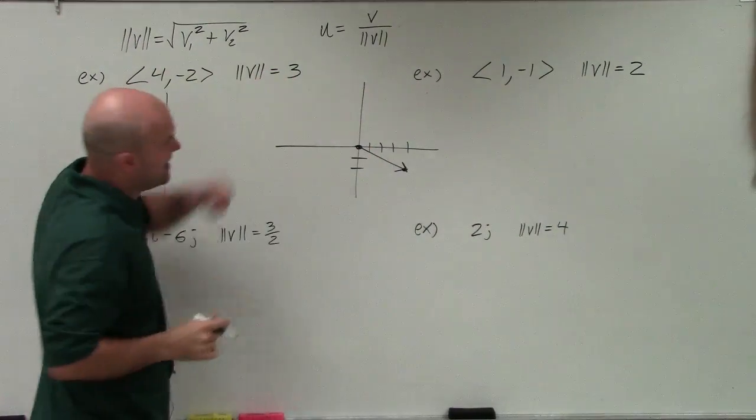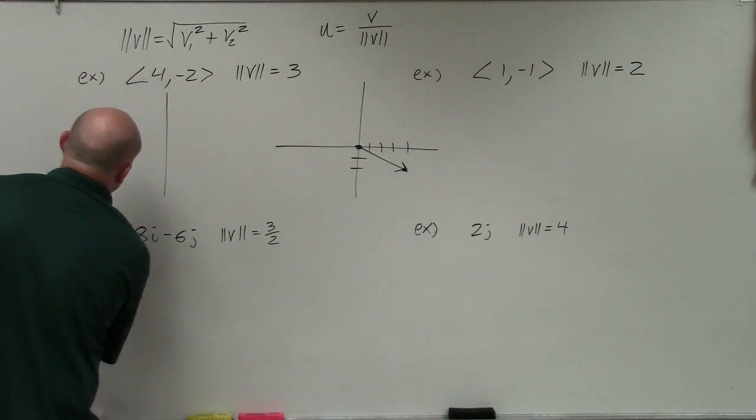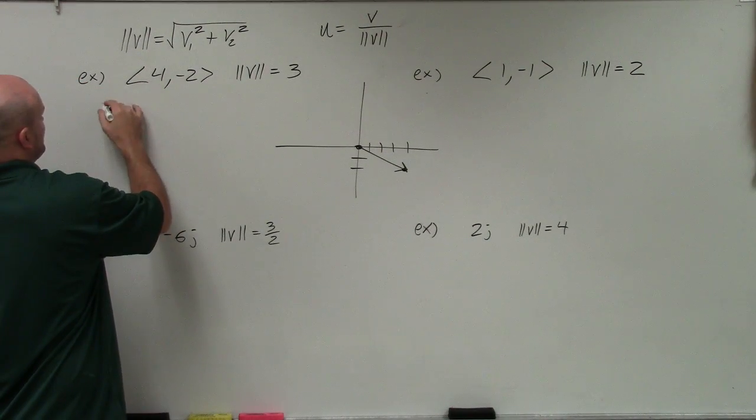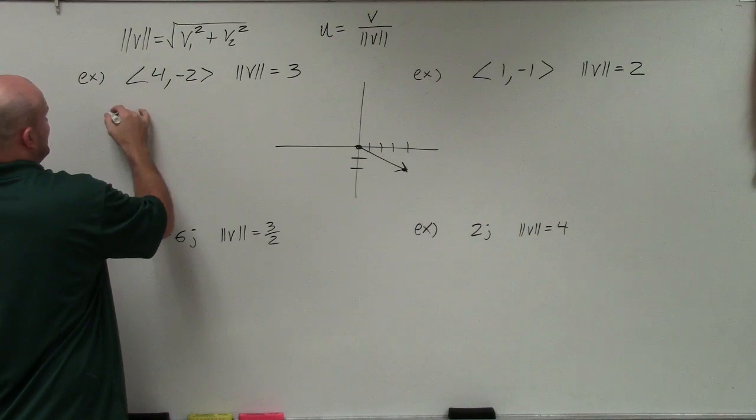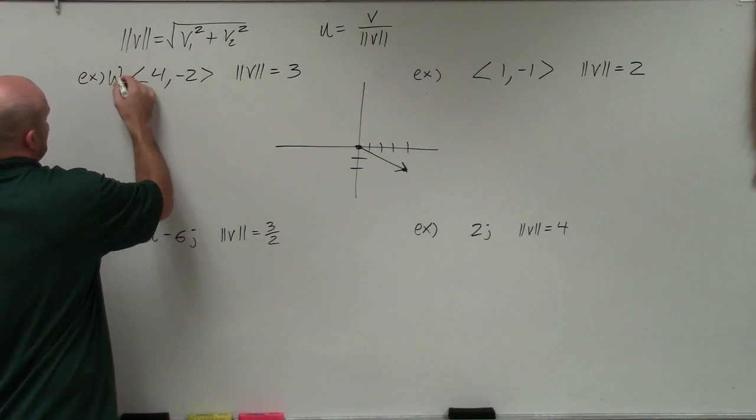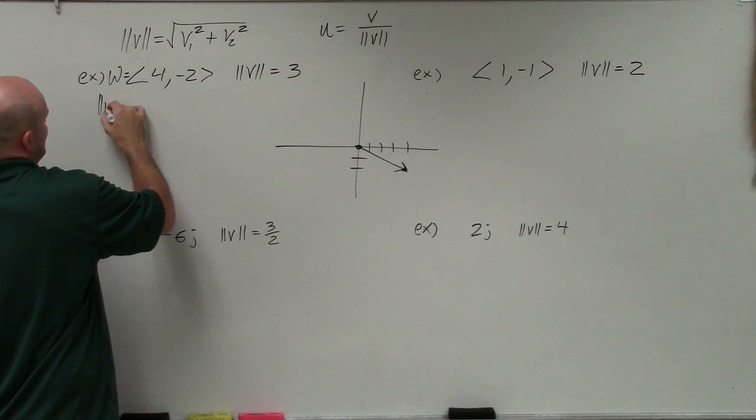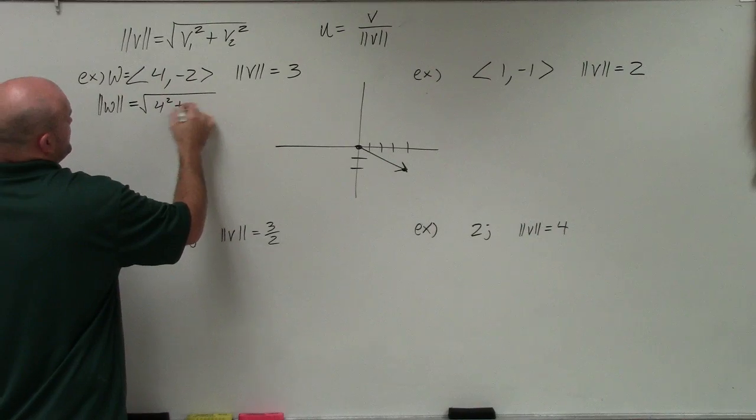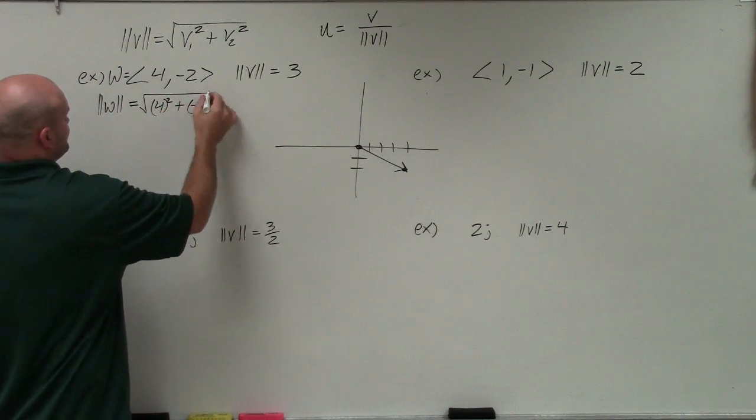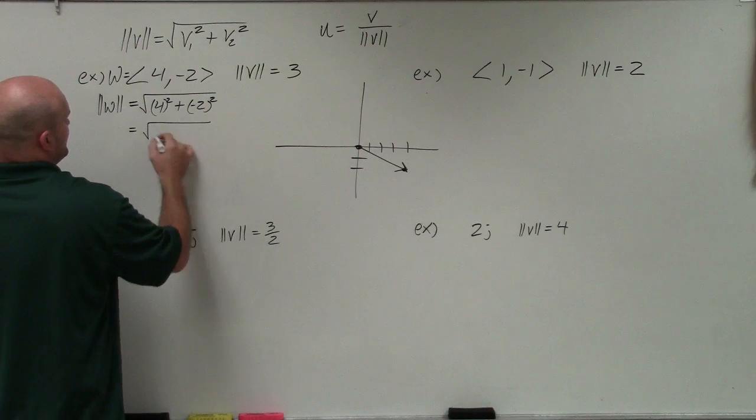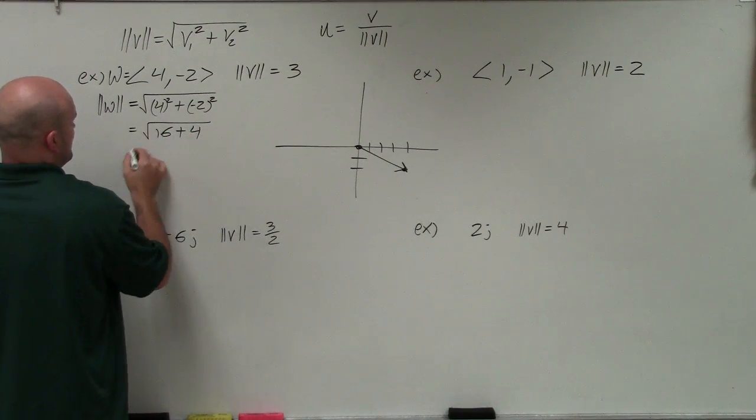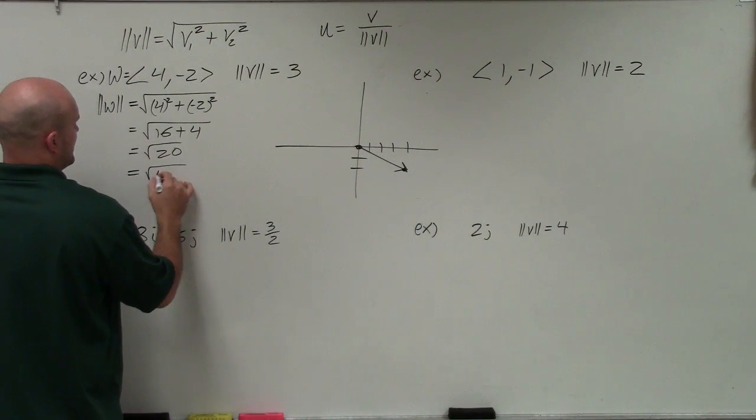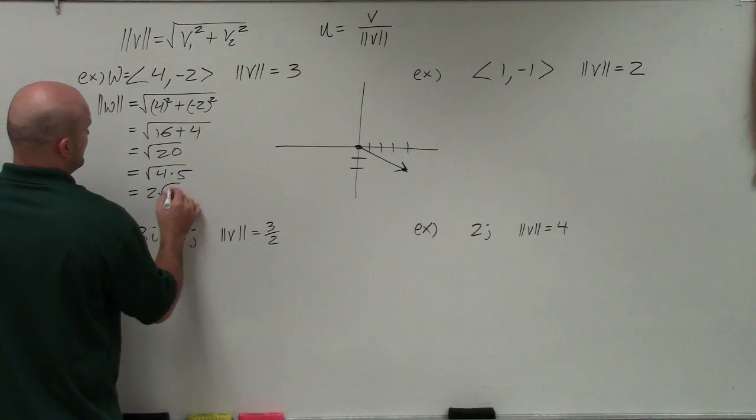Let's figure out what the magnitude is of this vector. So if I find the magnitude of my vector w, that's going to be 4 squared plus negative 2 squared, which equals 16 plus 4, which equals the square root of 20, which equals 2 times the square root of 5.